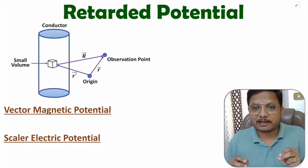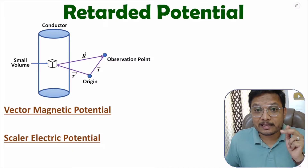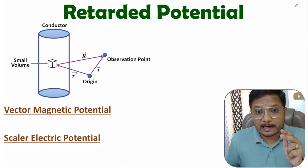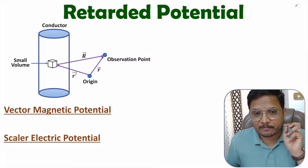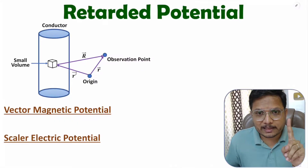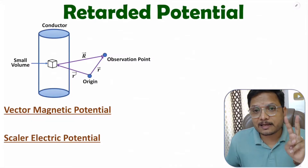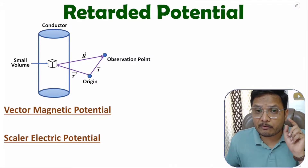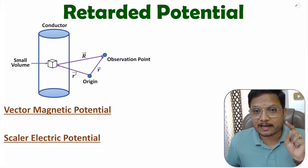Retarded potential is measured in time-varying fields. First of all, you need to understand how many types of potentials there are. There are two types of potentials in EM waves: one is vector magnetic potential, and the second is scalar electric potential. I will explain how to identify each of them.